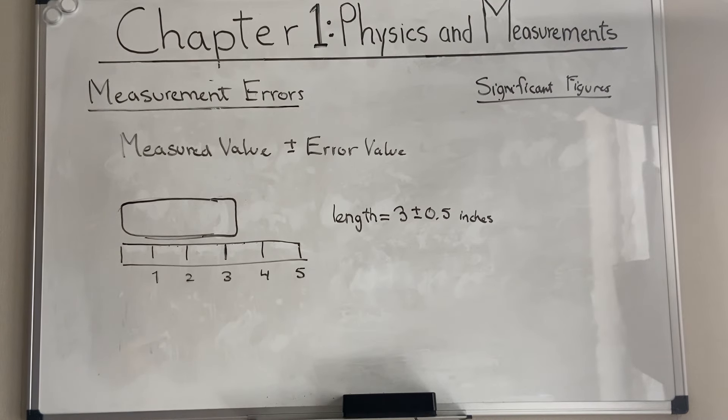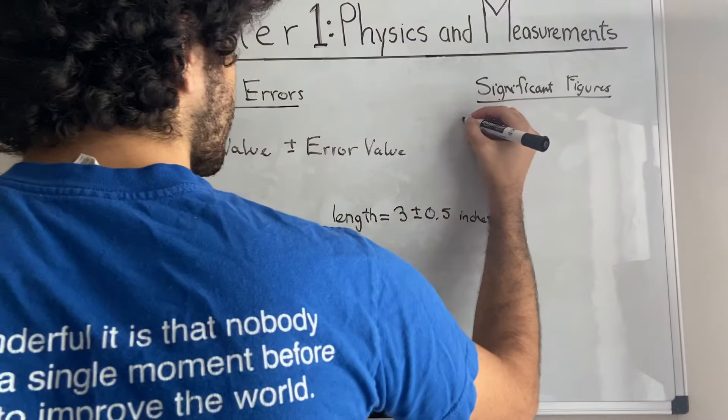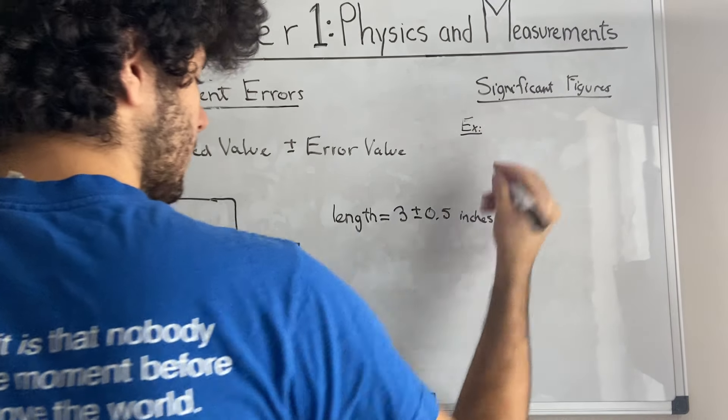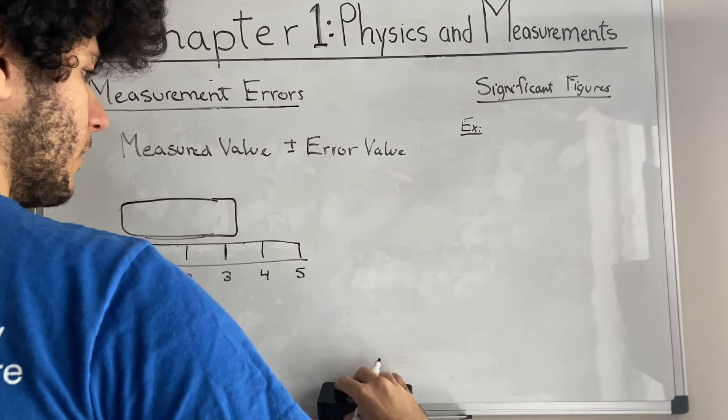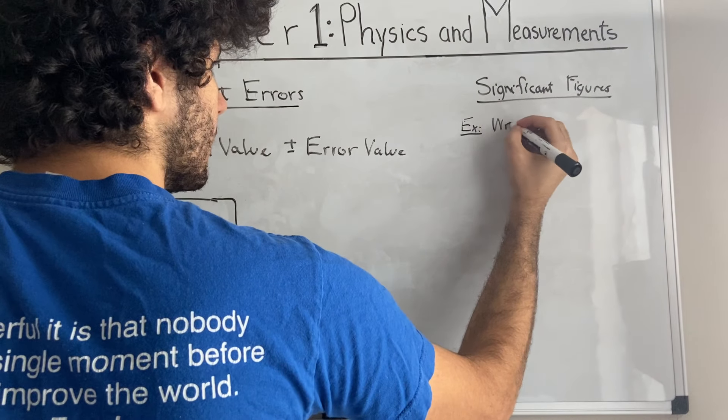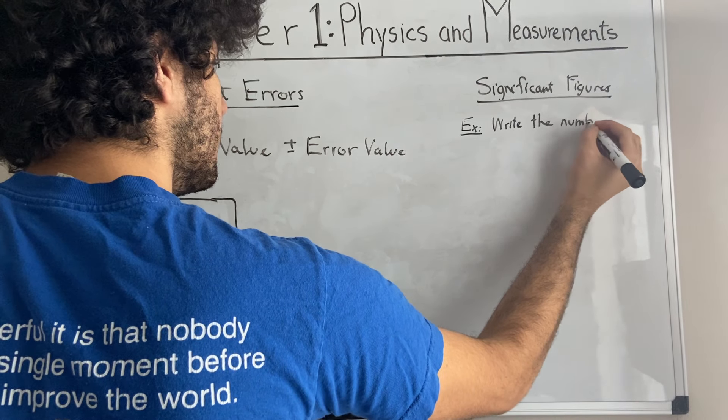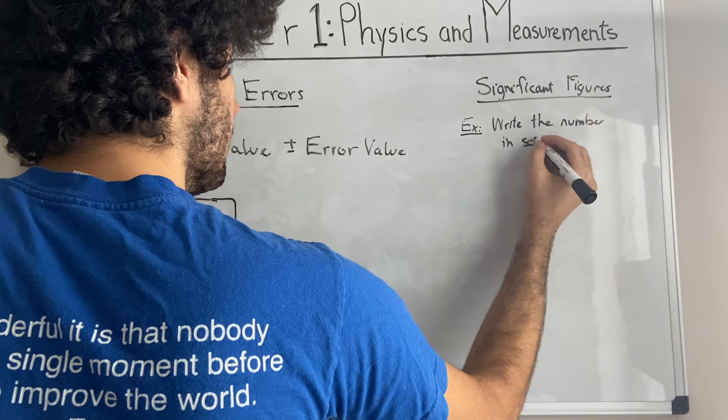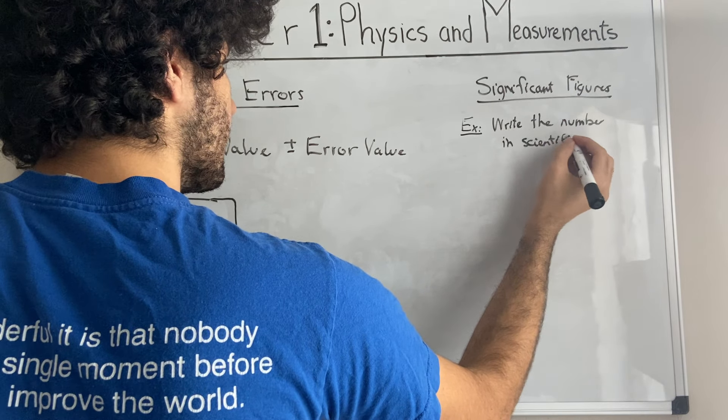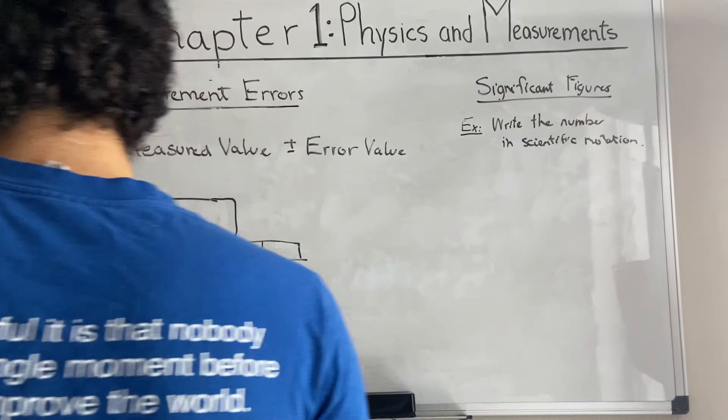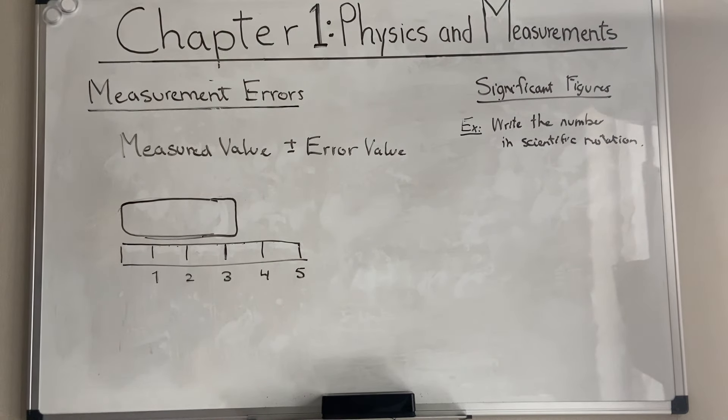It basically helps us determine how accurate a scientist was while he was measuring something. Depending on if he was using a very good tool or if he was using his eye to determine the length of an object, which is very imprecise. Inaccurate, I mean. An example for significant figures would be the following. To write the number in scientific notation.